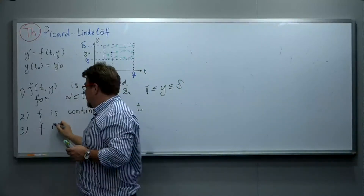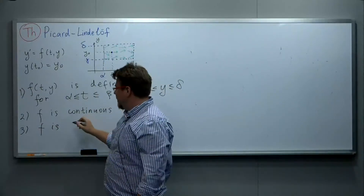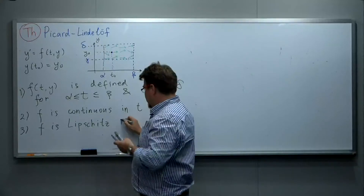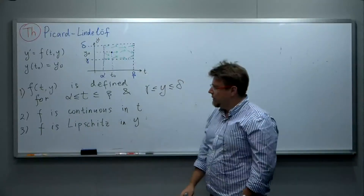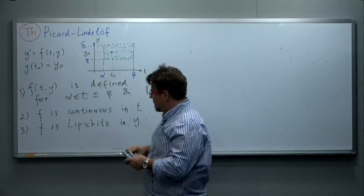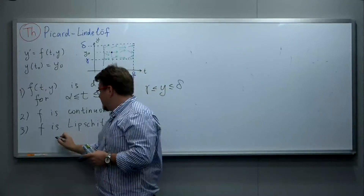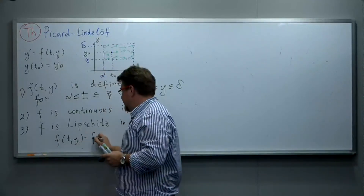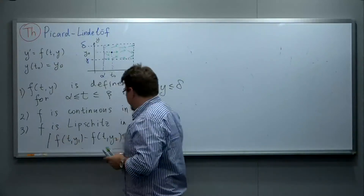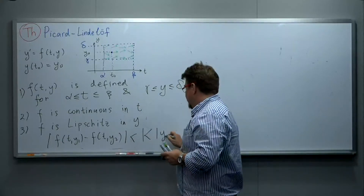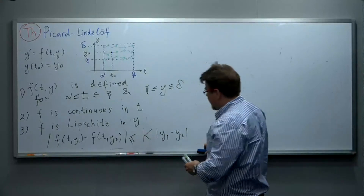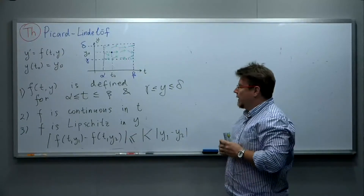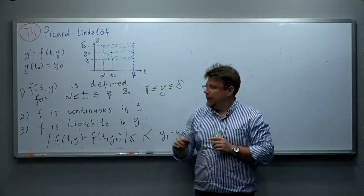The third condition is that f is Lipschitz continuous with respect to y — f satisfies the Lipschitz condition in y. This means there exists a positive constant k such that |f(t, y₁) − f(t, y₂)| ≤ k|y₁ − y₂| for all y₁, y₂.